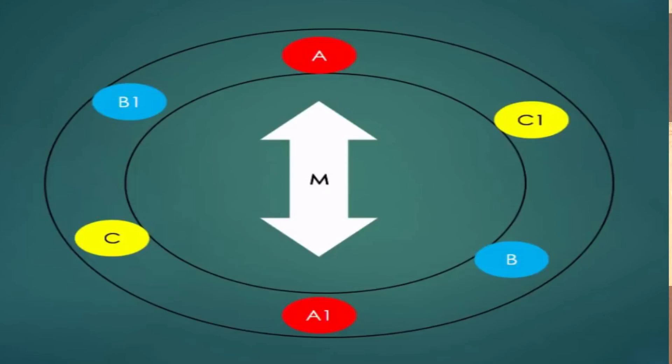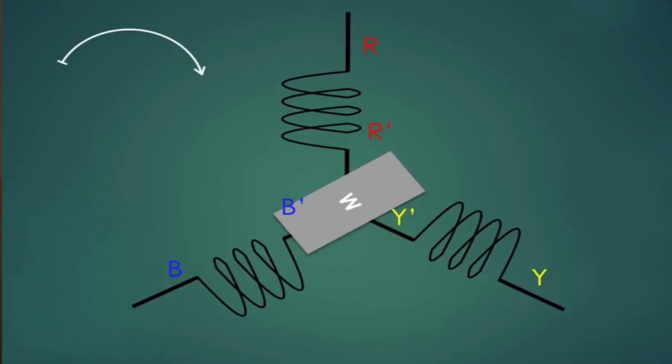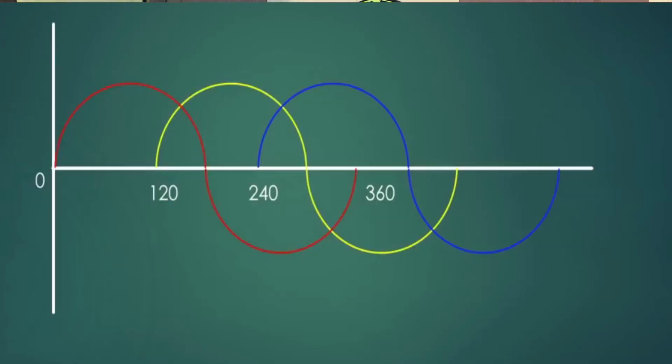The next example is that we have a straight-aligned magnet and we have a maximum voltage. We have a maximum voltage of R, and we have a 120-degree magnet with a maximum peak voltage. We have a peak voltage at 120 degrees and we have a phase sequence.